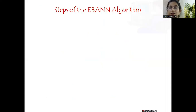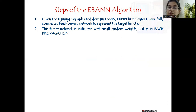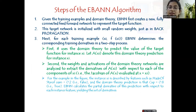Let us see the various steps of the EBNN algorithm and how we obtain the target network. In the first step, given the training examples and the domain theory, EBNN creates a new fully connected feed-forward neural network to represent the target function. This target function is initialized with small random weights — if the clause is true, 0.8 is assigned; if false, 0.2 is assigned. Then, for each training example x_i comma f(x_i), EBNN determines the corresponding training derivatives in a two-step process.